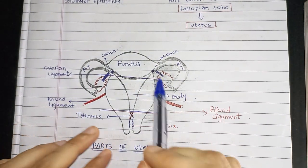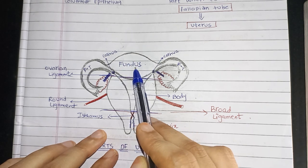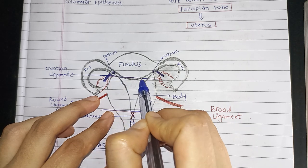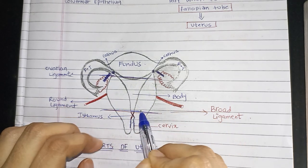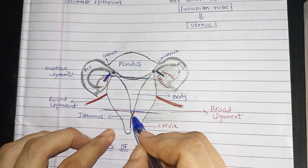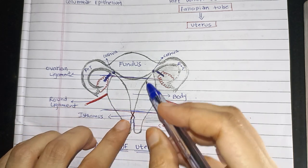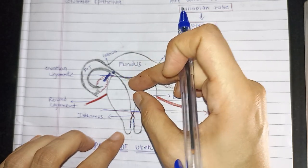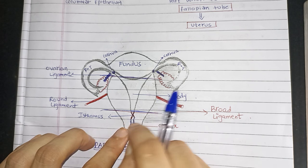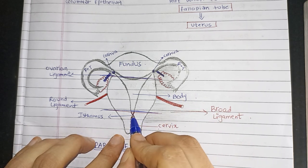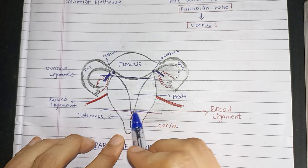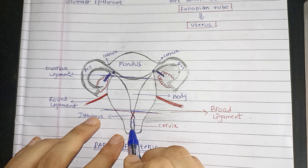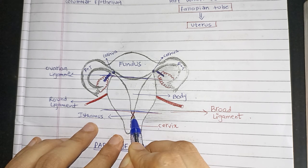Now let's understand from the diagram. The uppermost part which is free from the uterus is the fundic part. Below the fundus and above the isthmus is the body part. Isthmus is the part which connects the uterus to the cervix. This is the body of the uterus, this is the cervix, and this is the isthmic part — so the isthmic part connects the body of the uterus to the cervix.